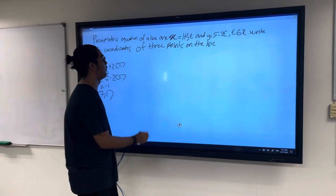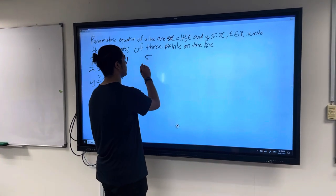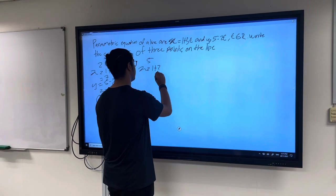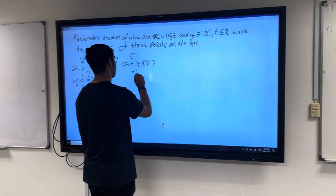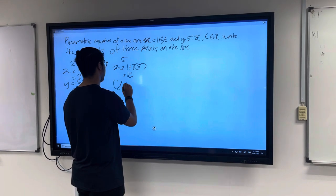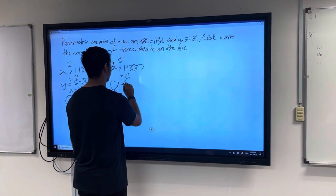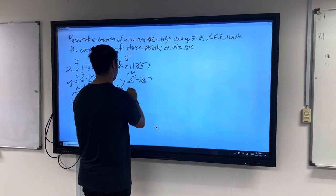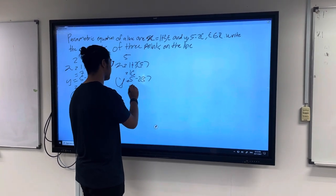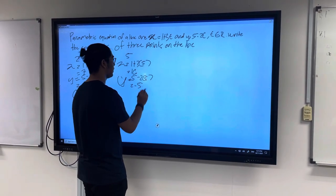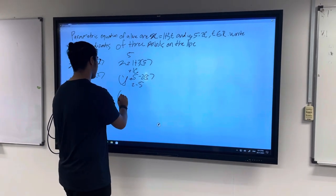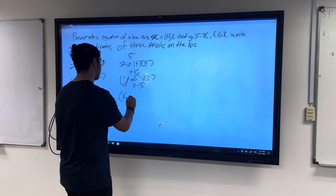The second one we'll be using is 5. So x equals 1 plus 3 times 5, equals 16. y equals 5 minus 2 times 5, equals negative 5. And the point here will be (16, -5).